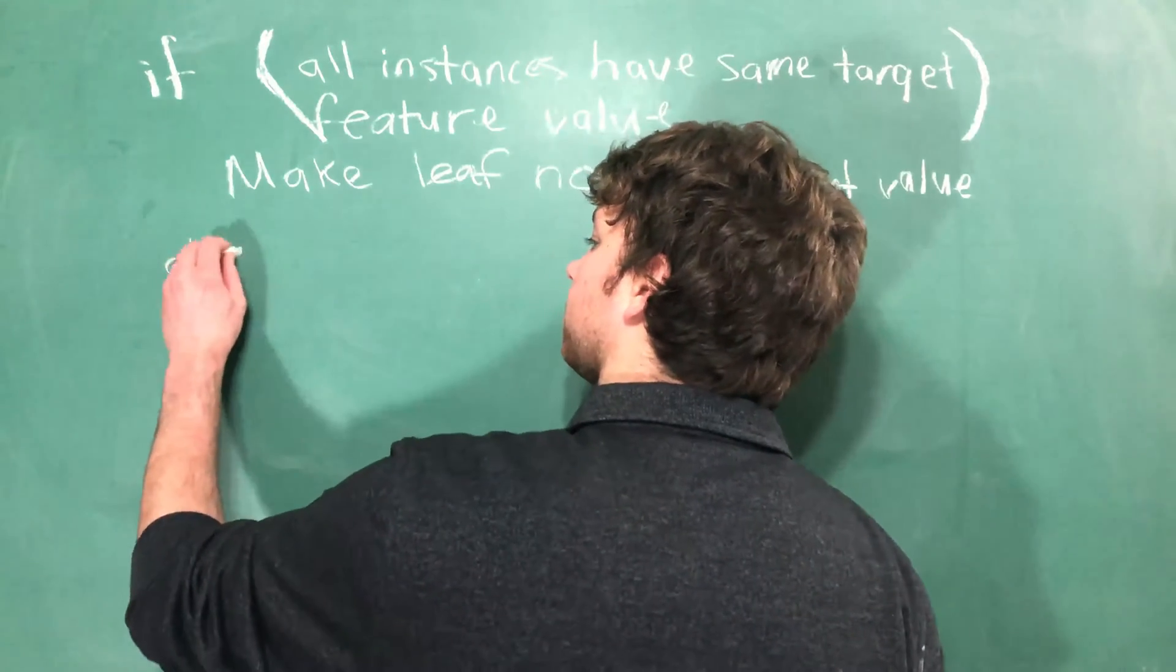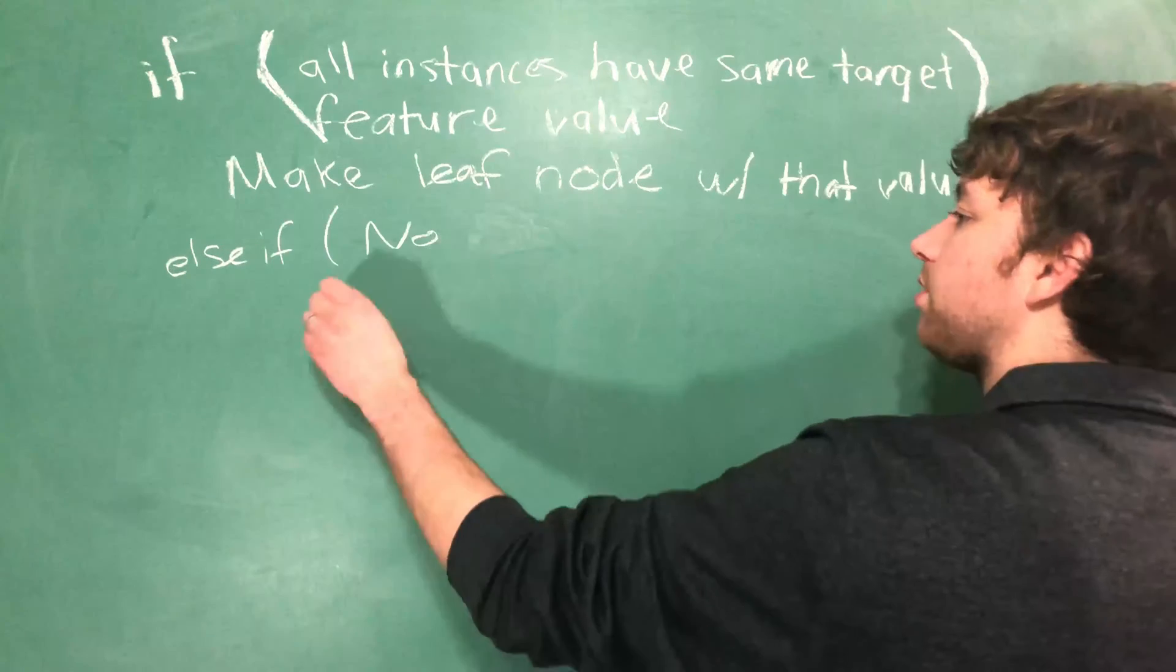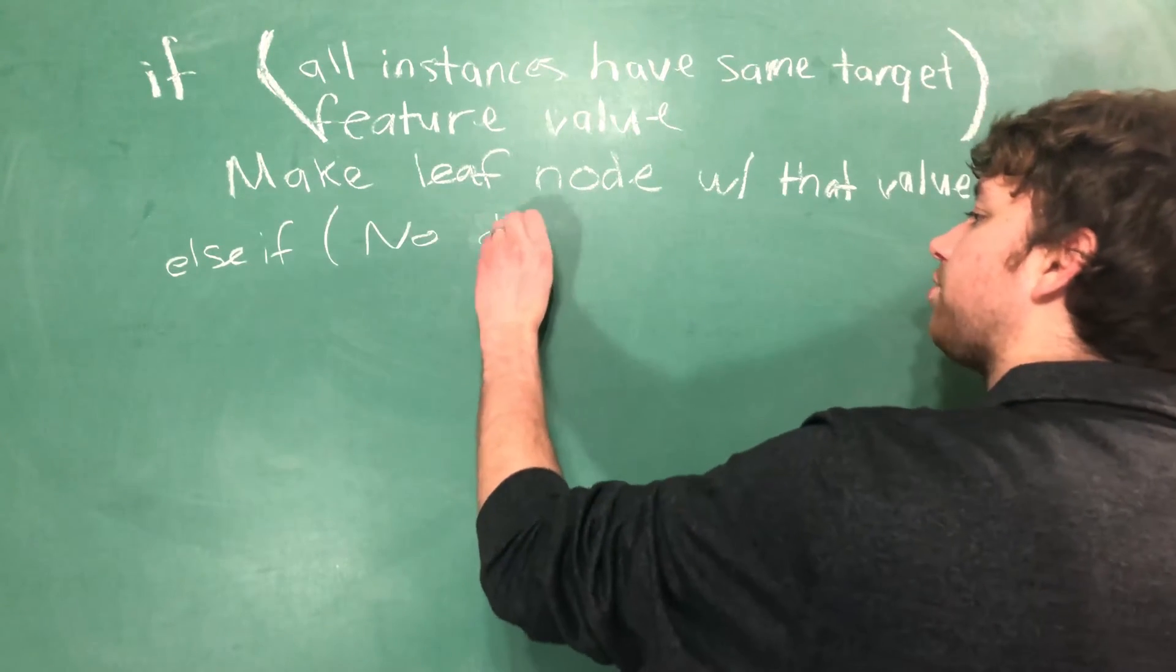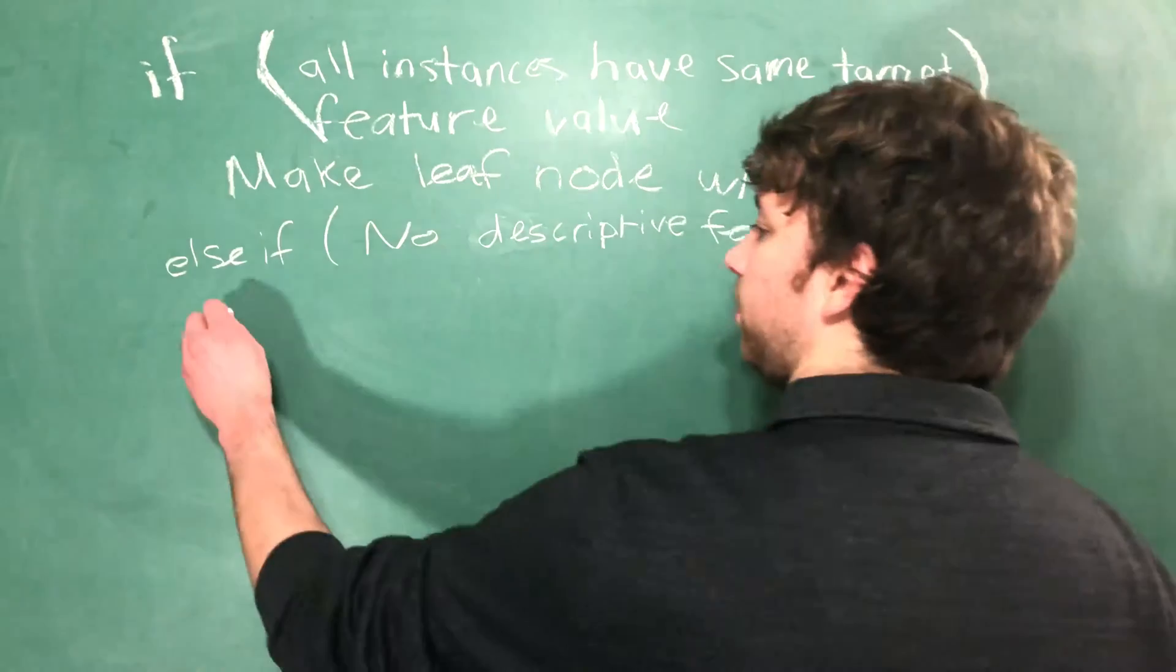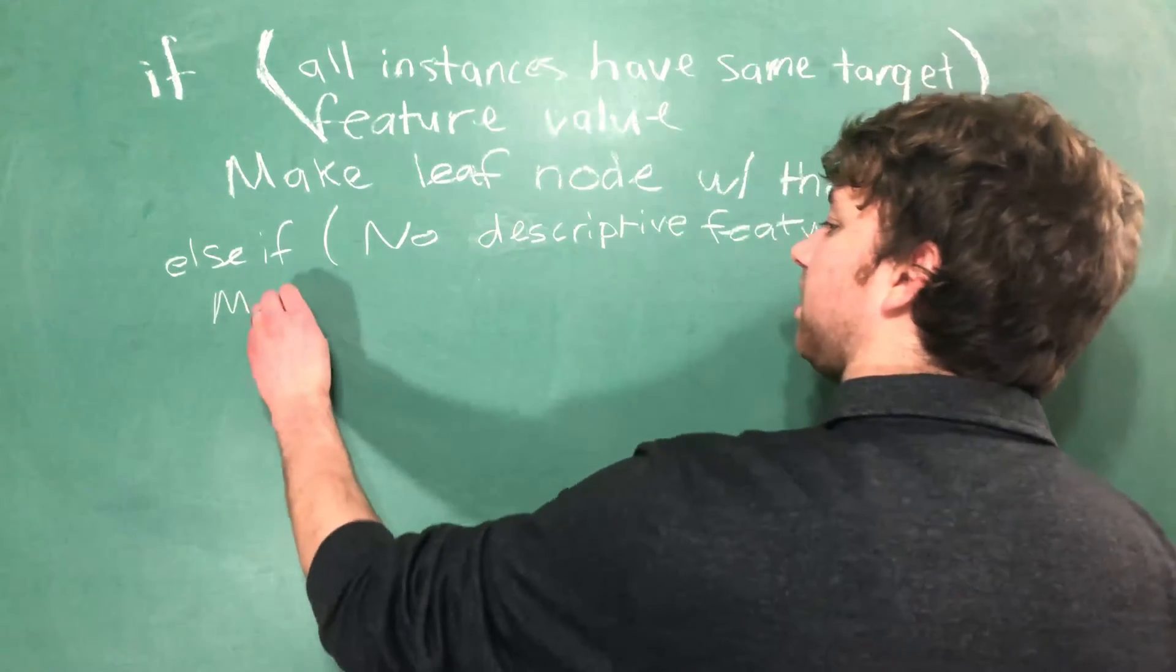The other base case is a little different but very similar. Else if we run out of descriptive features to split on, we are going to make the leaf node with the majority.